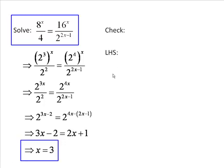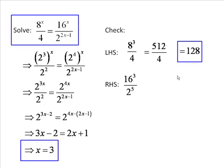Once again, let's do a check. First of all, the left-hand side. 8 cubed divided by 4 is 512 divided by 4, which is 128. Right-hand side. 16 cubed divided by 2 to the power of 5. That's substituting 3 for x. 4096 divided by 32, which is also 128. So we have solved that equation correctly as well.